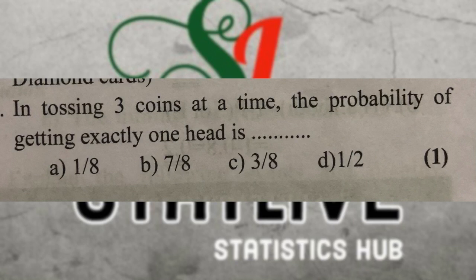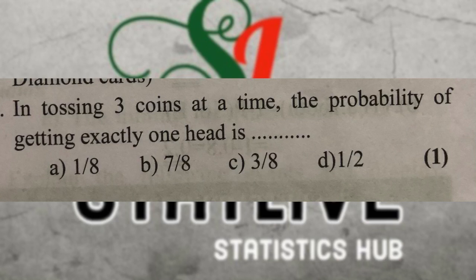In tossing three coins at a time, the probability of getting exactly one head. We identify all outcomes with exactly one head from the sample space of three coins and calculate the probability.